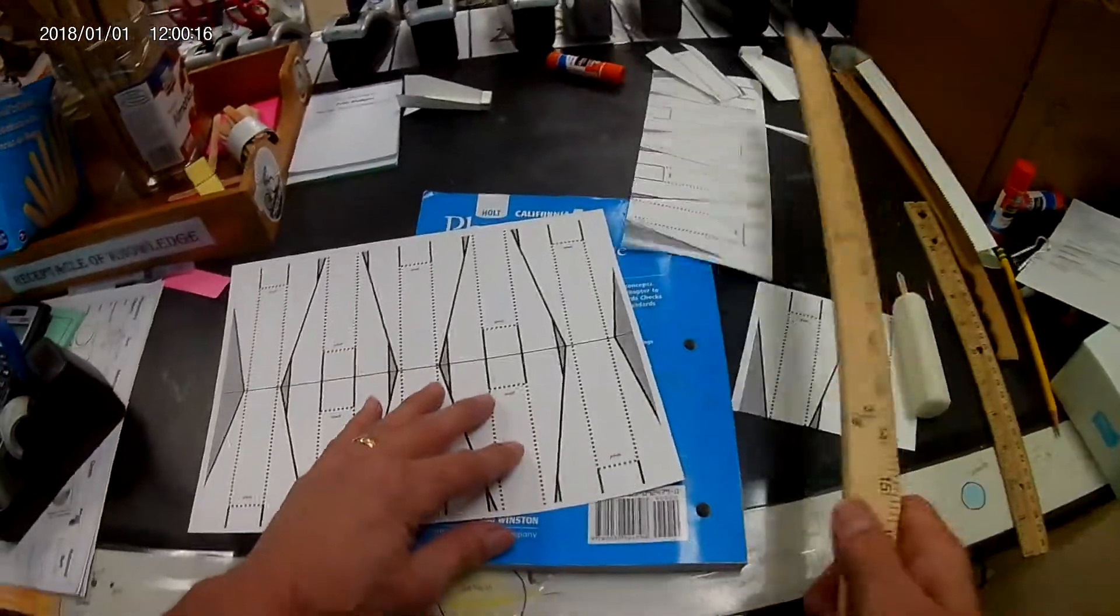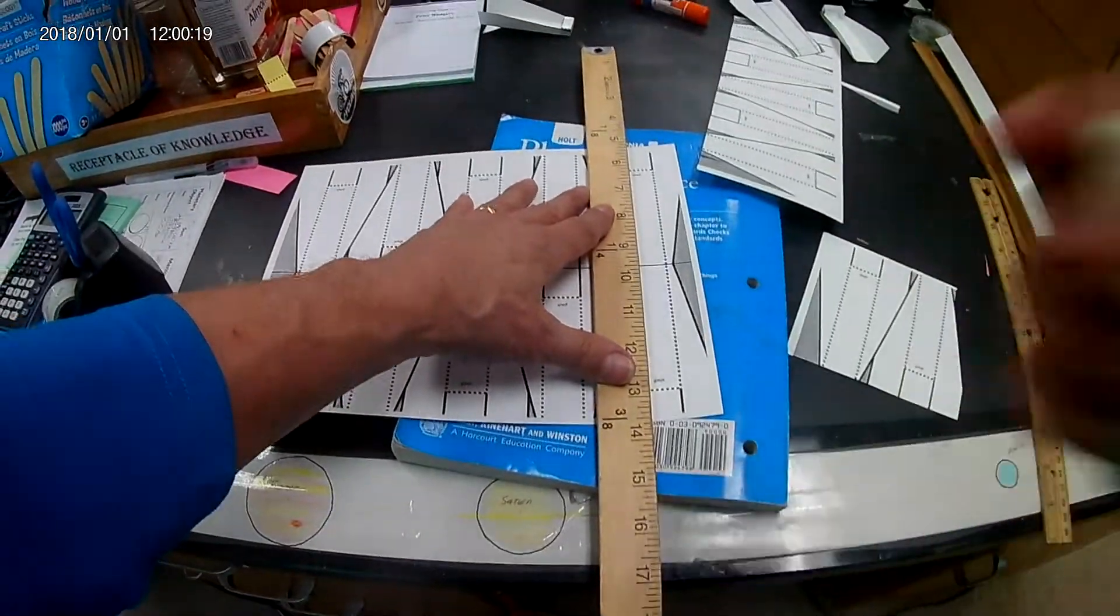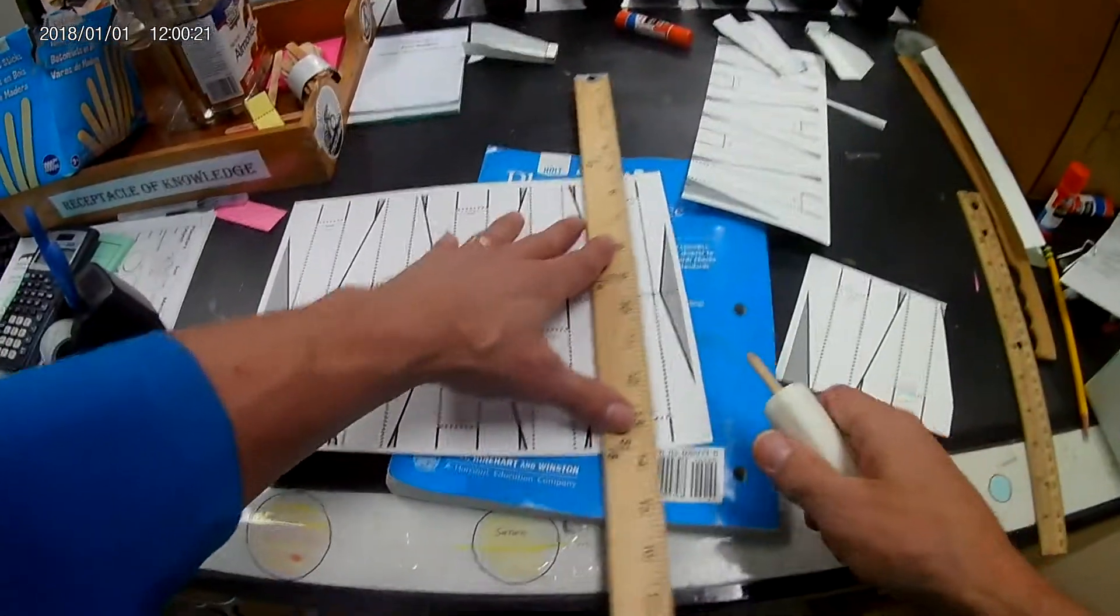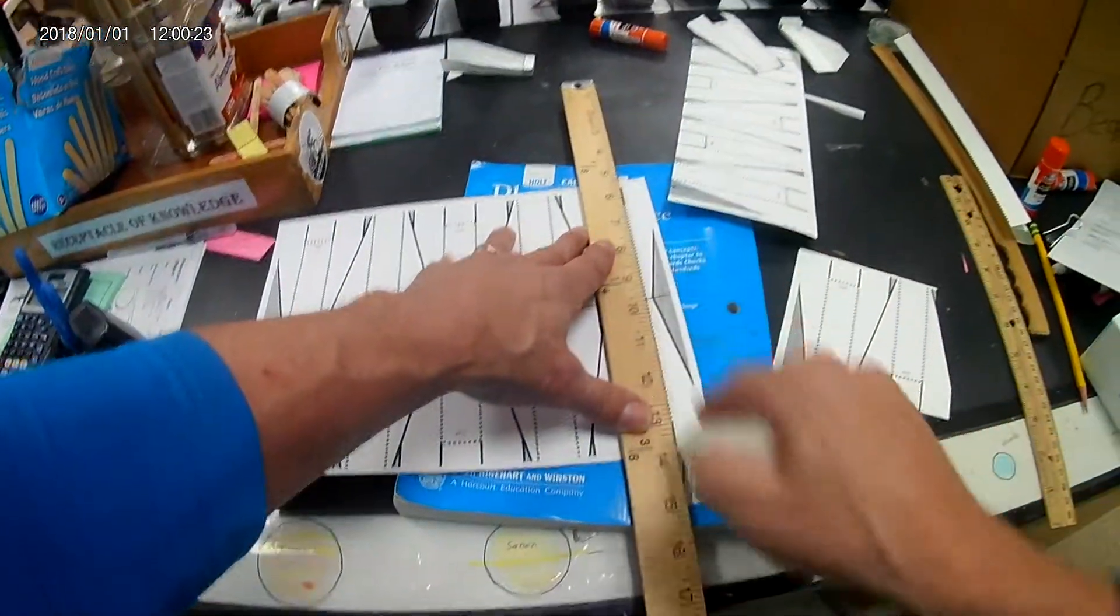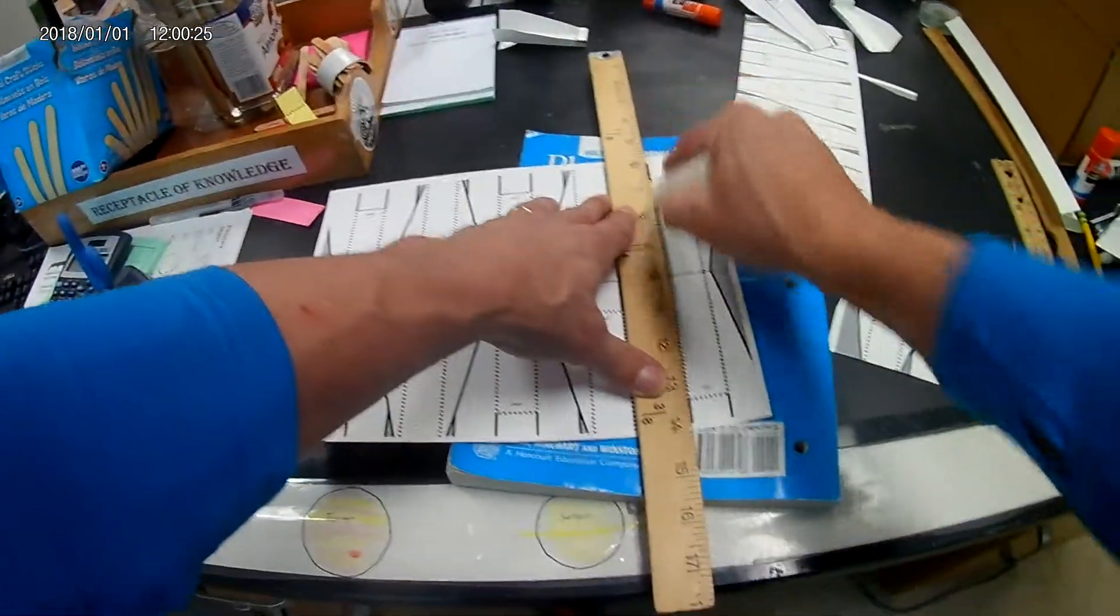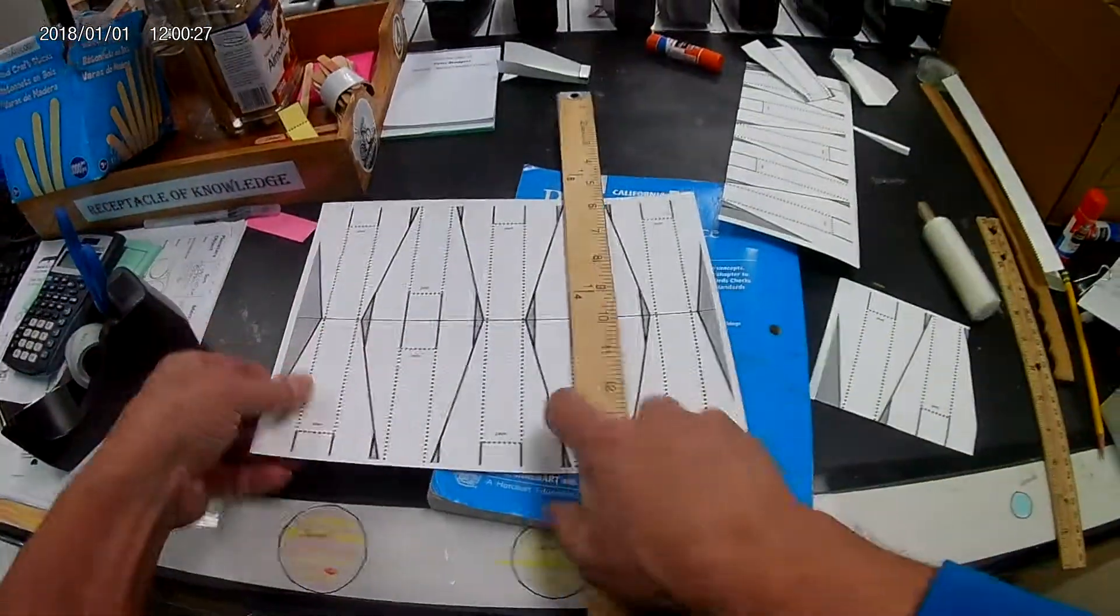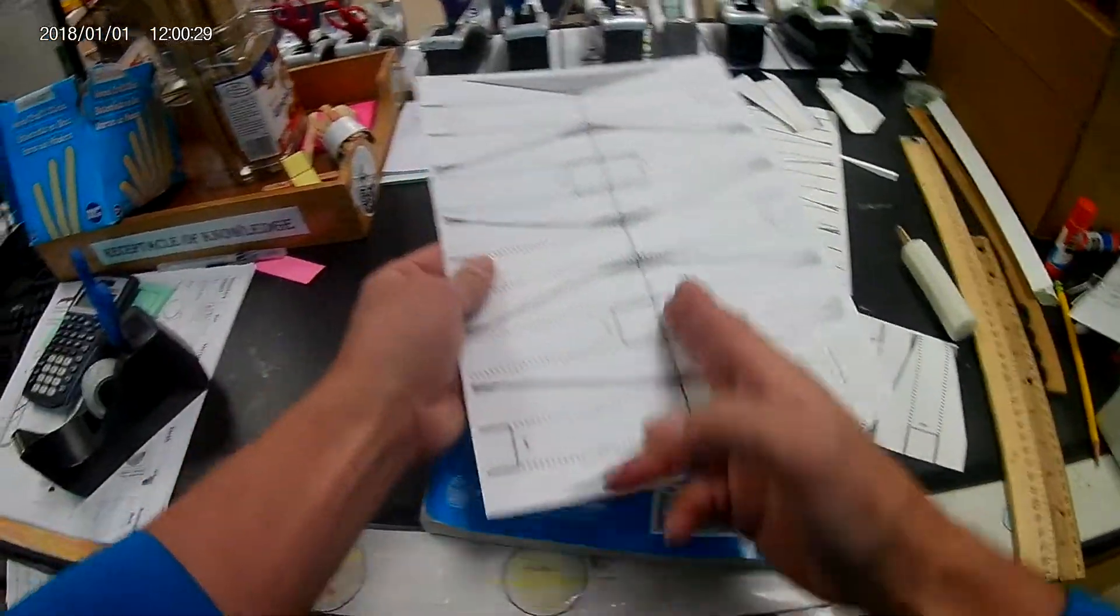What you're going to want to do first always, of course, is... let's see how we're doing now, that looks pretty good. Make sure you score. It's a lot easier when you score the whole page like this, and then come back and cut it out.